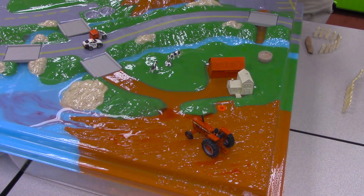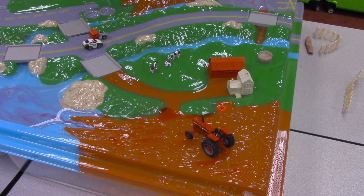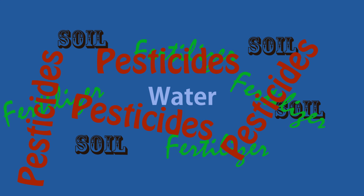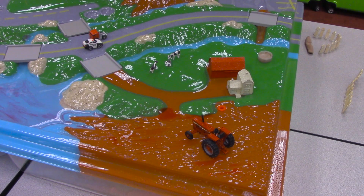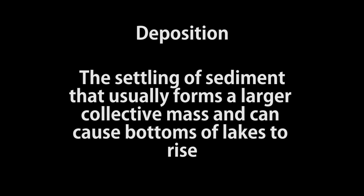As we continue to add rain to the model, you can see how the water starts moving downhill into our lakes, rivers, or streams. This movement of water also carries with it soil, fertilizer, pesticides, and manure. As this water enters the lake in the model, you can see the movement of soil, fertilizer, and pesticides throughout the lake. As the water slows down in the lake, the soil settles out. This is a process of deposition and can cause the depth of the lake to be drastically lowered over time.